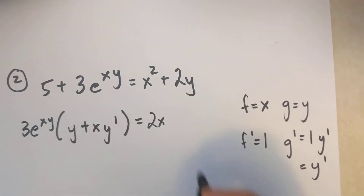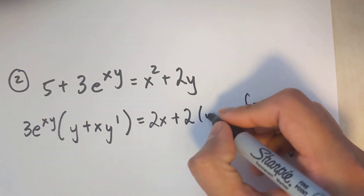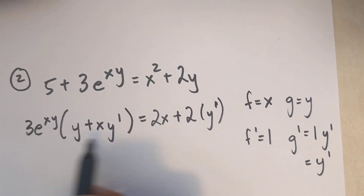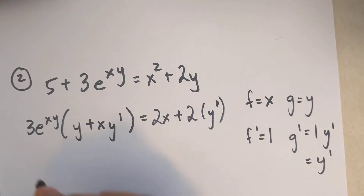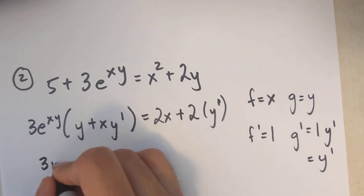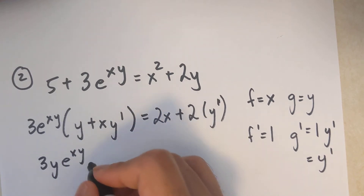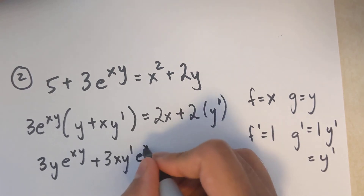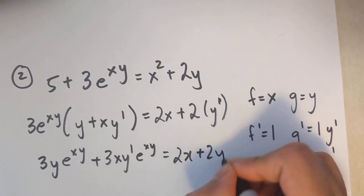I'll simplify by expanding the bracket first to get all y prime terms on one side. Expanding gives 3ye^(xy) plus 3xy prime e^(xy) equals 2x plus 2y prime.